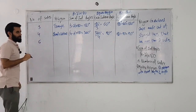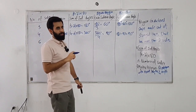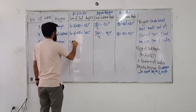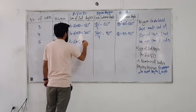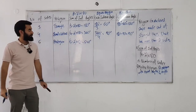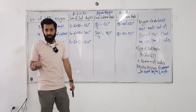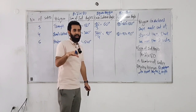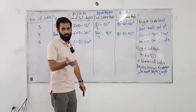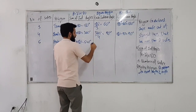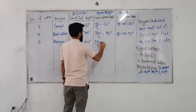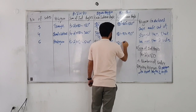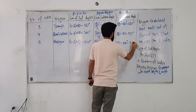A five-sided polygon — what do you call it? A pentagon. And the sum of interior angles? Five minus two times 180 equals 540. Each interior angle of a regular pentagon: we know it's equally distributed, so 540 divided by 5 is 108 degrees. And the exterior angle? 180 minus 108 is 72 degrees.